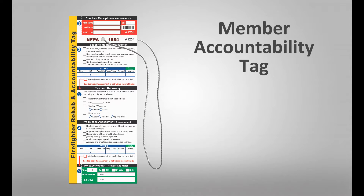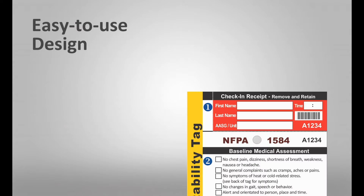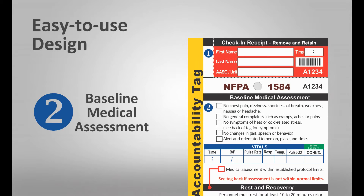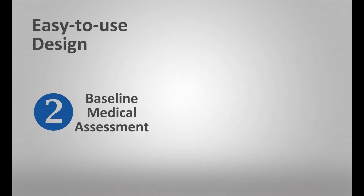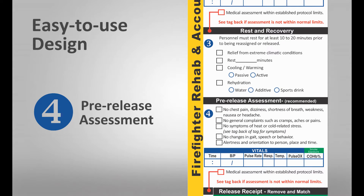The key component of the DMS system is the Member Accountability Tag. It is fully NFPA 2050 compliant and is designed to withstand adverse elements. The tag's easy-to-use design provides a by-the-numbers workflow to simplify the rehabilitation process. The member check-in receipt ensures all personnel are accounted for while in the rehab area. The baseline medical assessment detects and documents anomalies. The rest and recovery section ensures proper rehabilitation protocols are followed. The pre-release assessment documentation ensures firefighters are fit to return to duty.